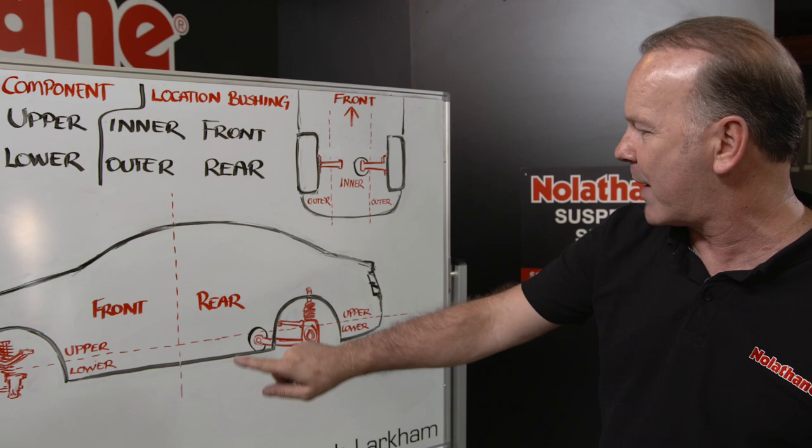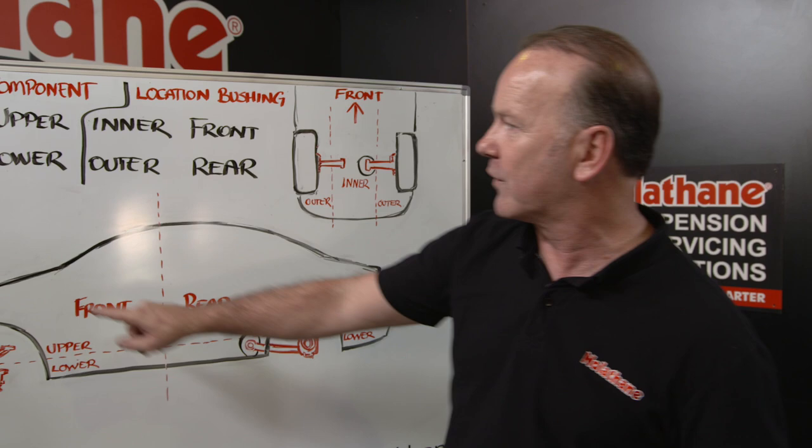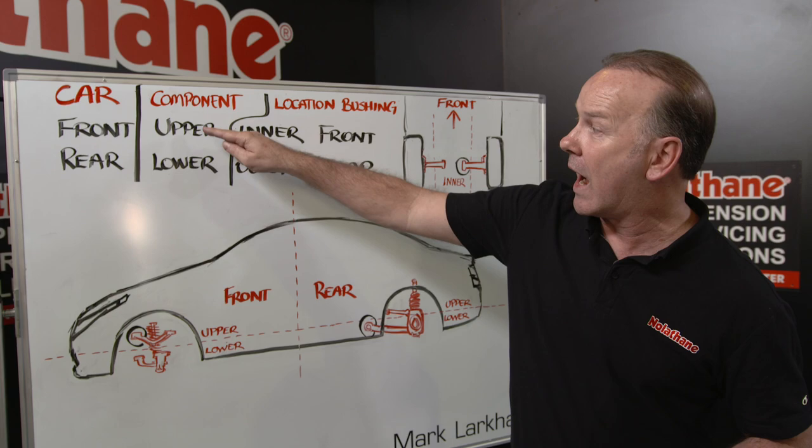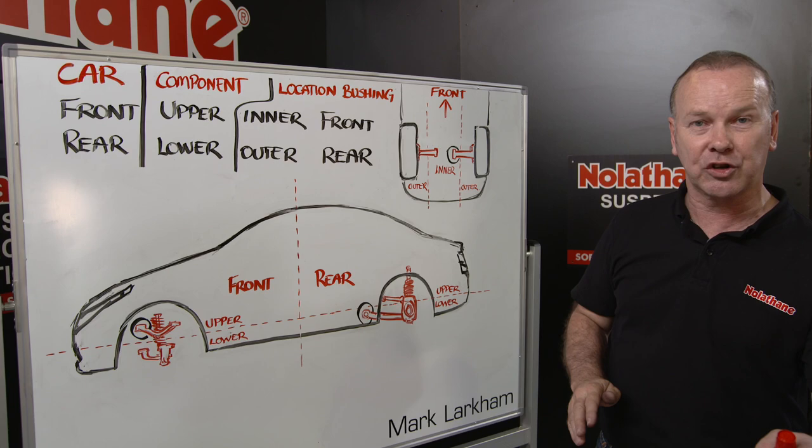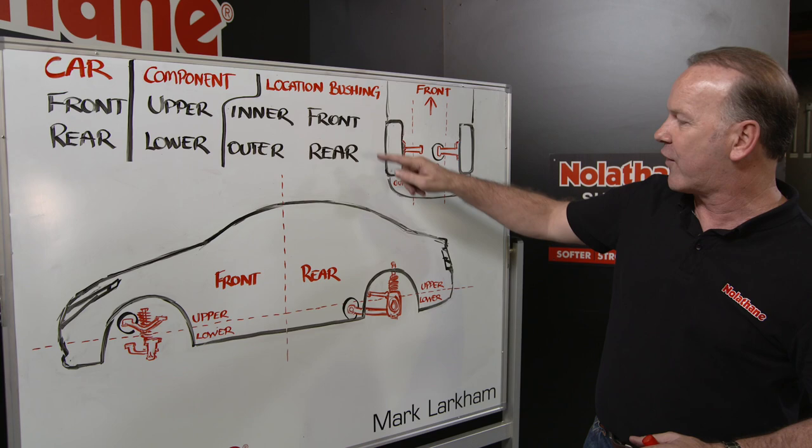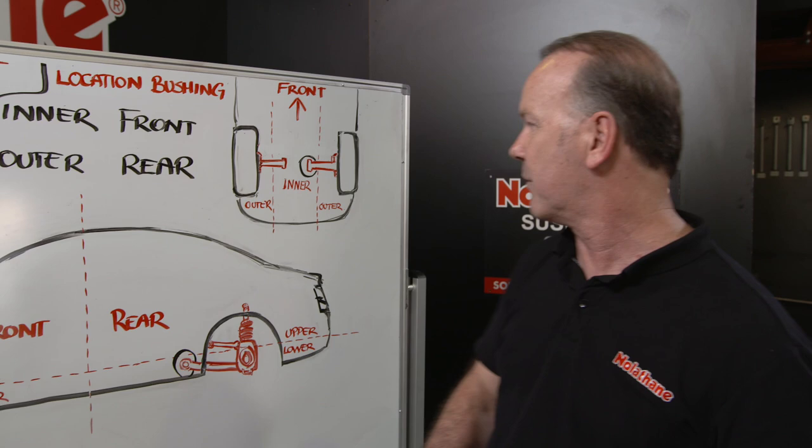If we come to the back of the car and we talk about our trailing arms, we've got a circle around this one. So it's car first — we know it's rear of car. We know it's upper and lower; we can see it's a lower. There's the upper arm and the lower arm. Inner and outer — because it's a trailing arm that runs along the car, there is no inner and outer in that one. And front and rear, well we can see on the component the location of the bushing: it's the front.